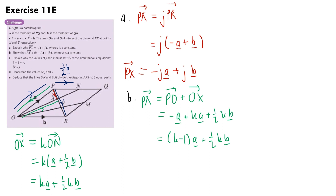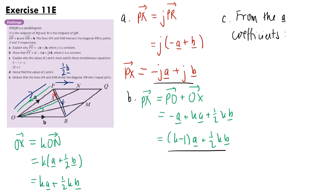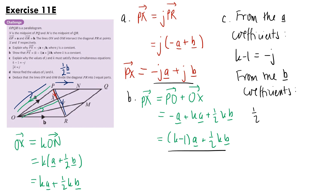For part c, we explain why j and k must satisfy simultaneous equations. Since both expressions equal the same vector px, the coefficients of a and b must match. From the a coefficients: k minus 1 equals minus j. From the b coefficients: one-half k equals j.